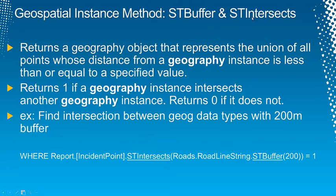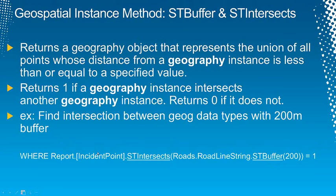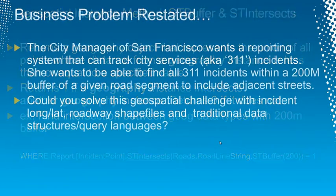A lot of times you'll be given data in longitude-latitude format, but what you want to do is get it into well-known text, which is the lingua franca allowing you to communicate between columns with geospatial methods. There's another method, as text, to go from that long binary string back to longitude and latitude. You'll also want to call a buffer or intersection method — this is key to solving our problem where we have incident points from the city and road line strings from a national shapefile database. We'll create a 200 meter buffer around a road line string and find all intersection points.